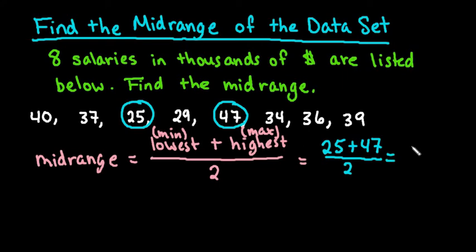So with this we end up with 72 divided by two, which is 36. And so we can say that the midrange of these salaries is $36,000.